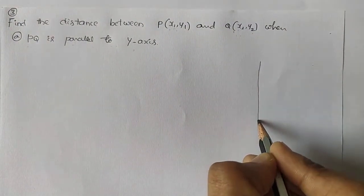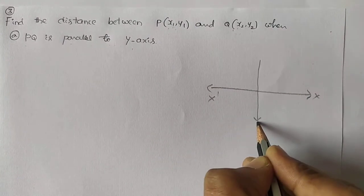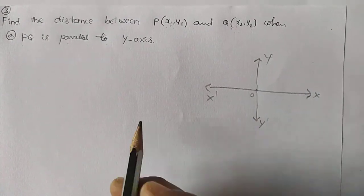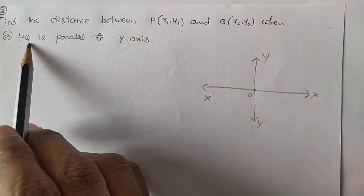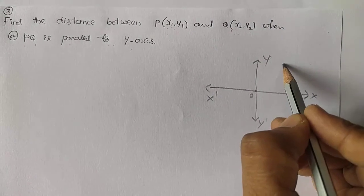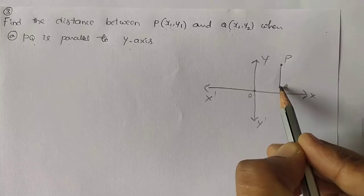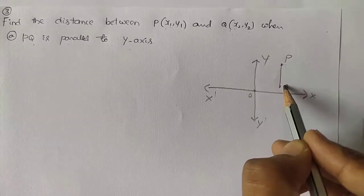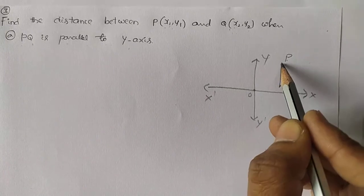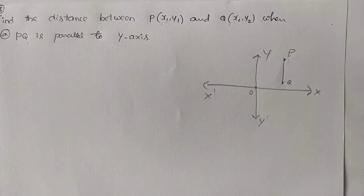Here we will have the xy-plane with x, negative x, negative y, and positive y-axis. The first question is PQ is parallel to y-axis. Suppose it is P and it is Q — PQ is parallel to y-axis. Then what is the distance between these two points P and Q? That line is parallel to y-axis. Let us find out the distance.